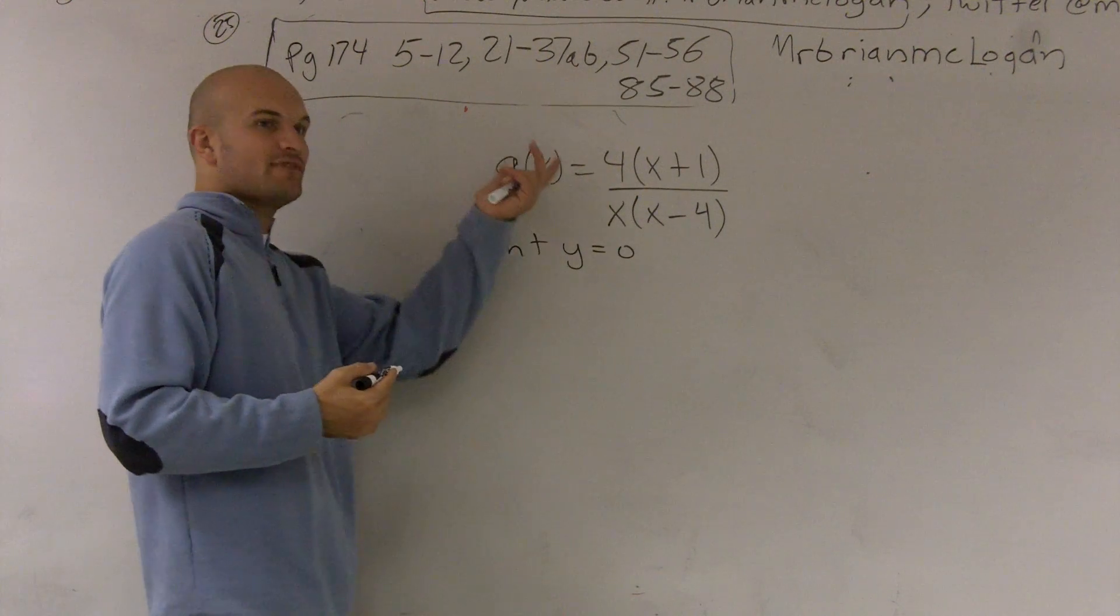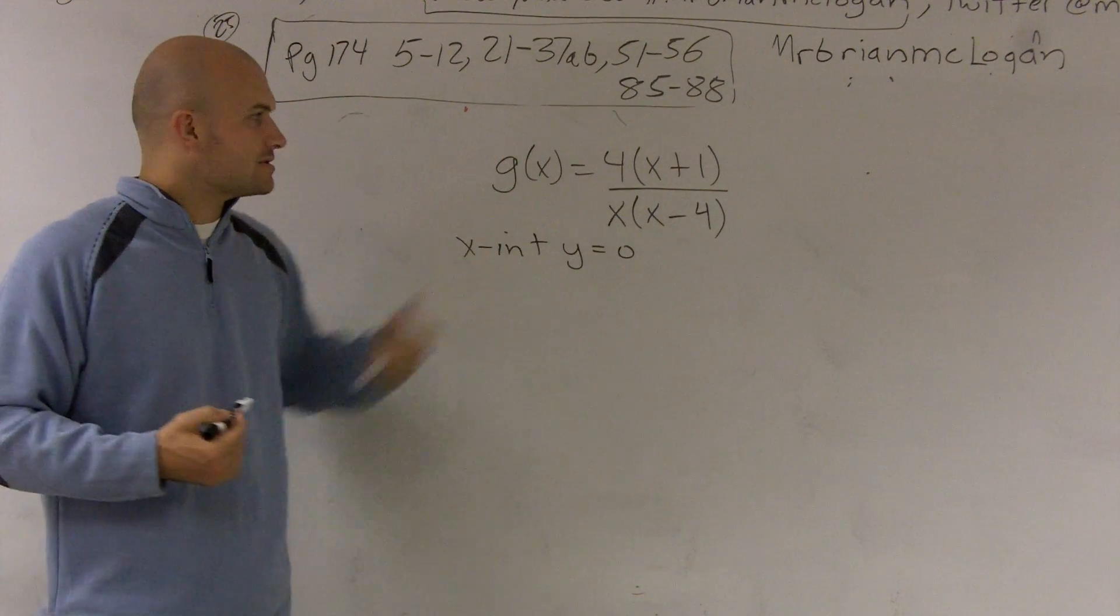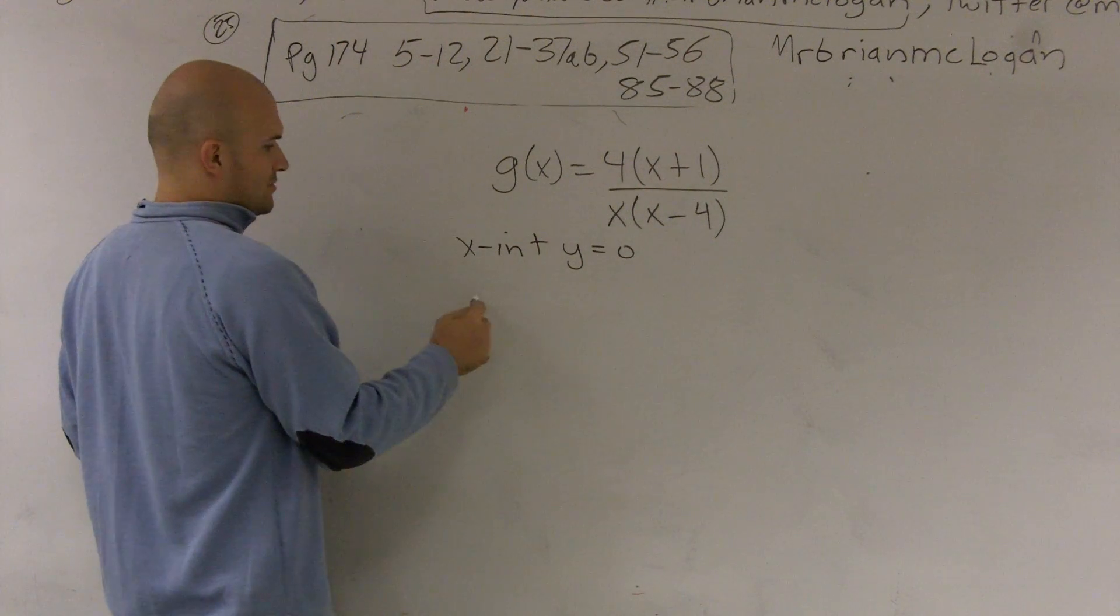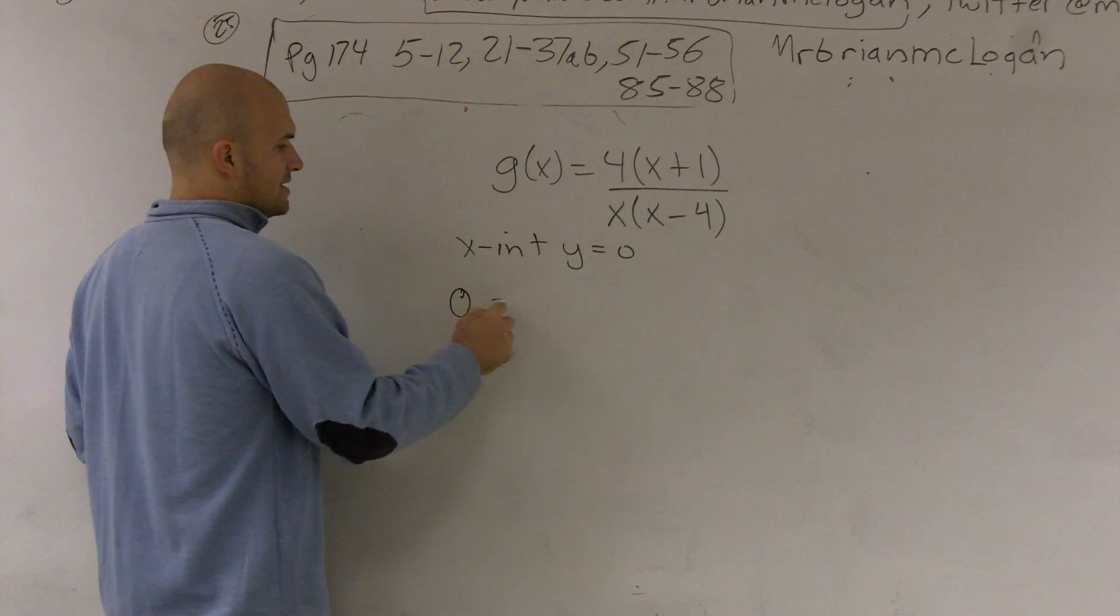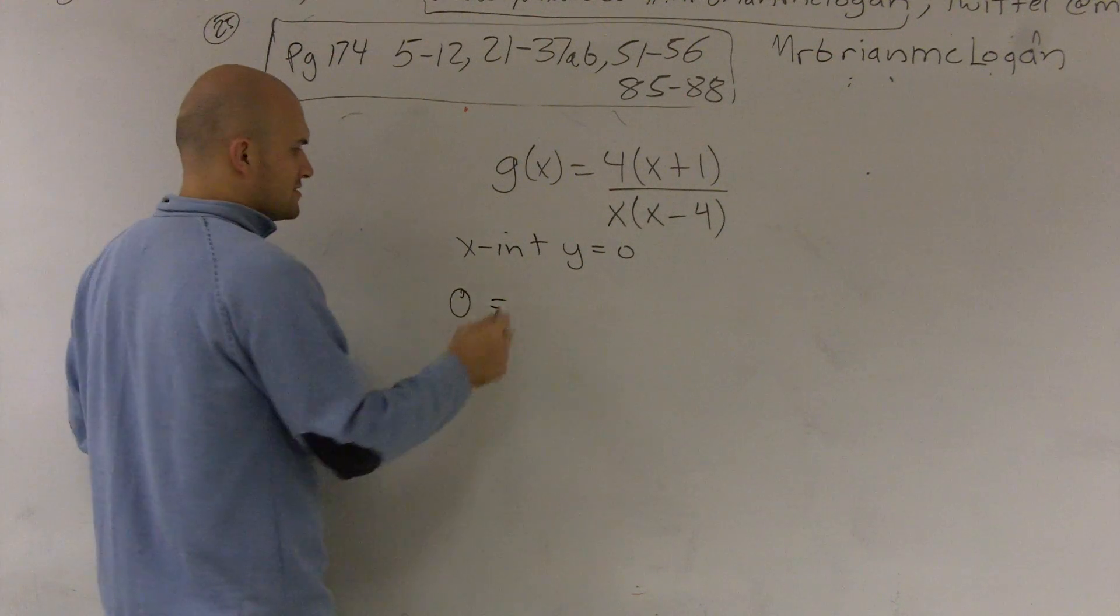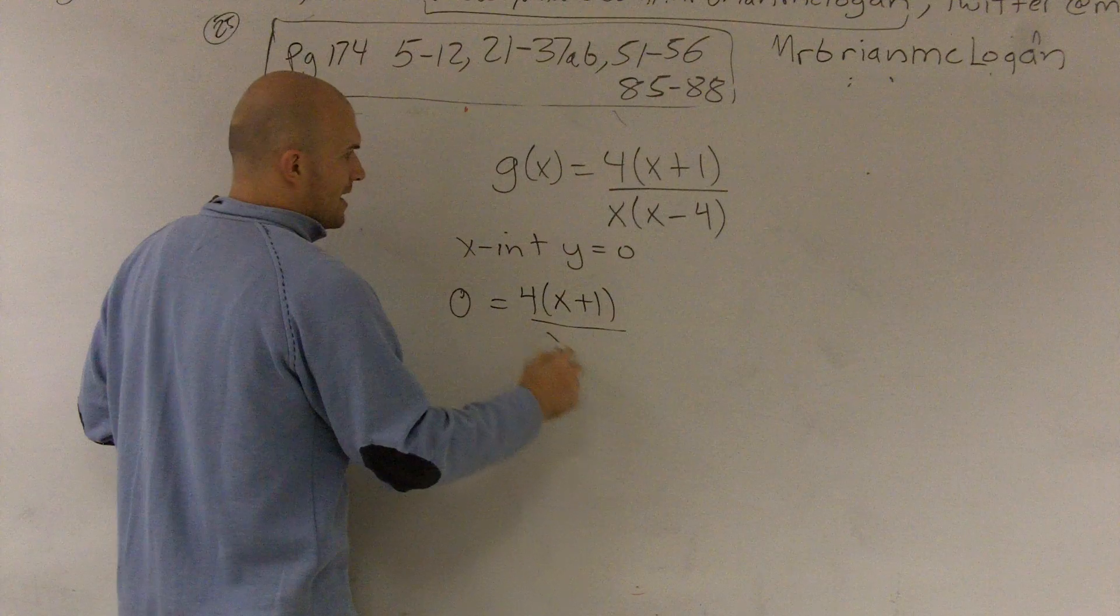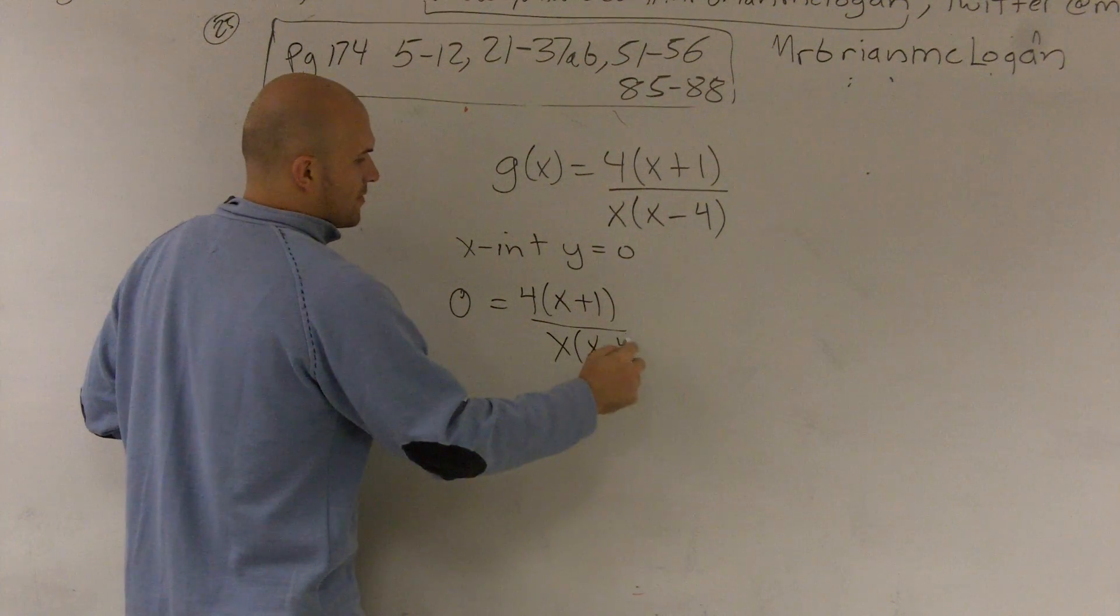Now, since we're dealing with a function, we've had our g of x represent our y values. So if I'm going to say y is equal to 0, I'm going to say 0 is equal. Because remember, 0 and g of x are kind of the same thing. They're both output values. Equals 4 times x plus 1 divided by x times x minus 4.